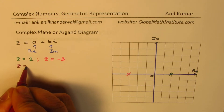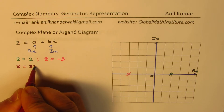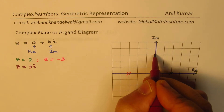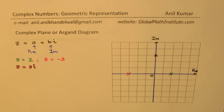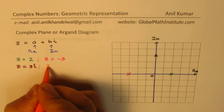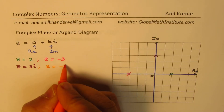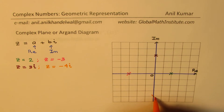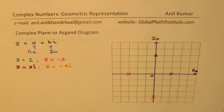On the other hand, if I have a pure imaginary number, let's say z equals 3i — each unit is 1i, so 1, 2, 3 — this position here represents 3i. Let's take another point: z equals minus 4i. Minus 4i will be represented 1, 2, 3, 4 units down, and that becomes minus 4i. So that is how we can represent pure real and imaginary parts.